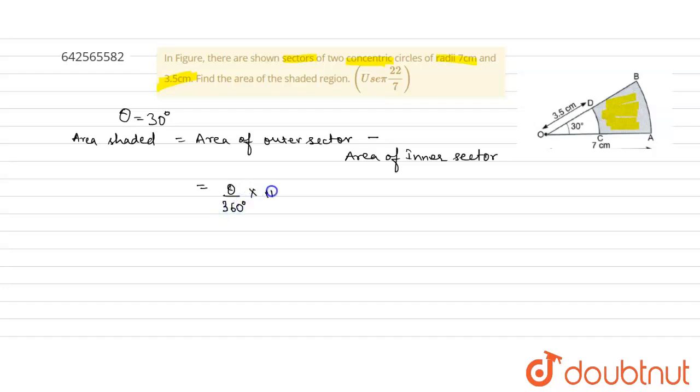R will be 7 here, 7 squared, minus theta by 360 into pi into 3.5 squared, which is equal to 30 by 360 into pi will be taken out common.